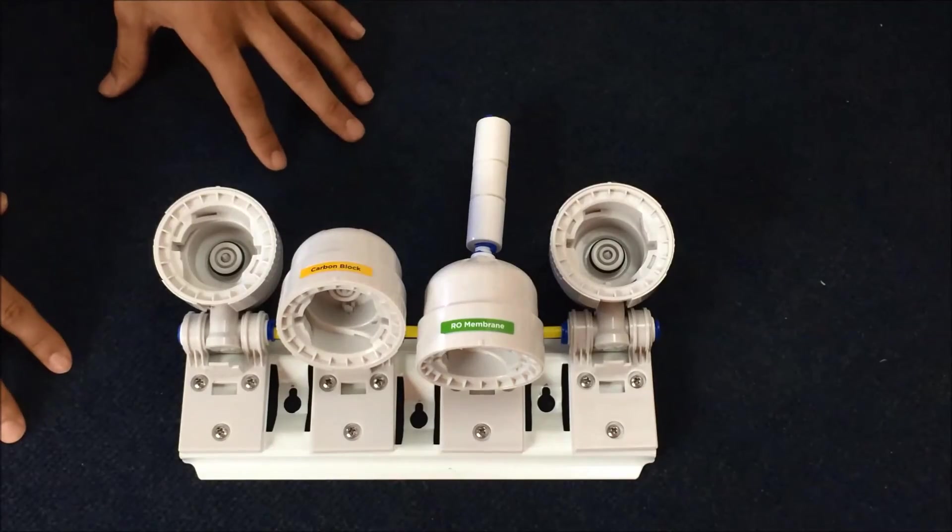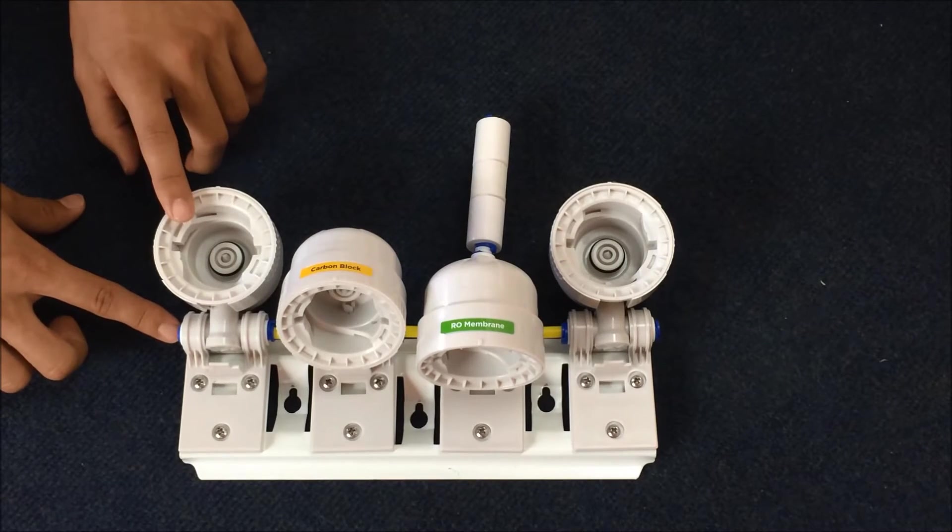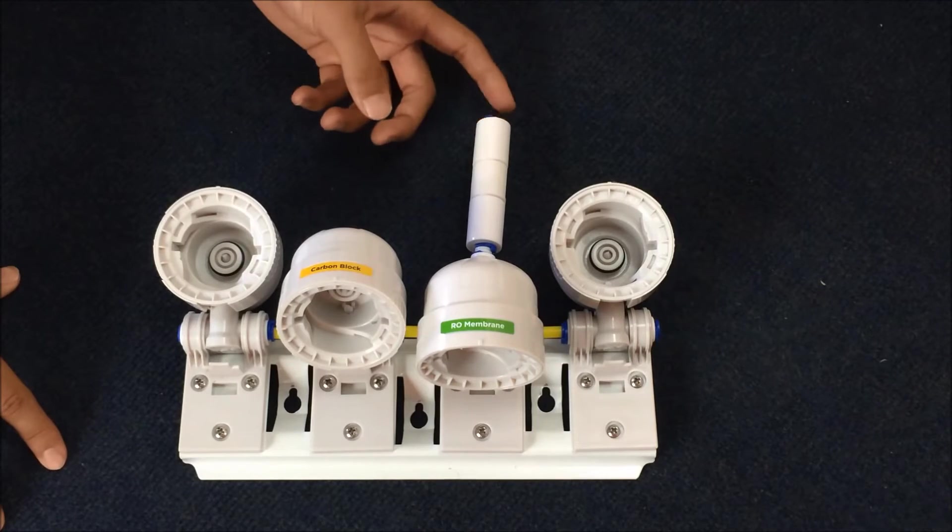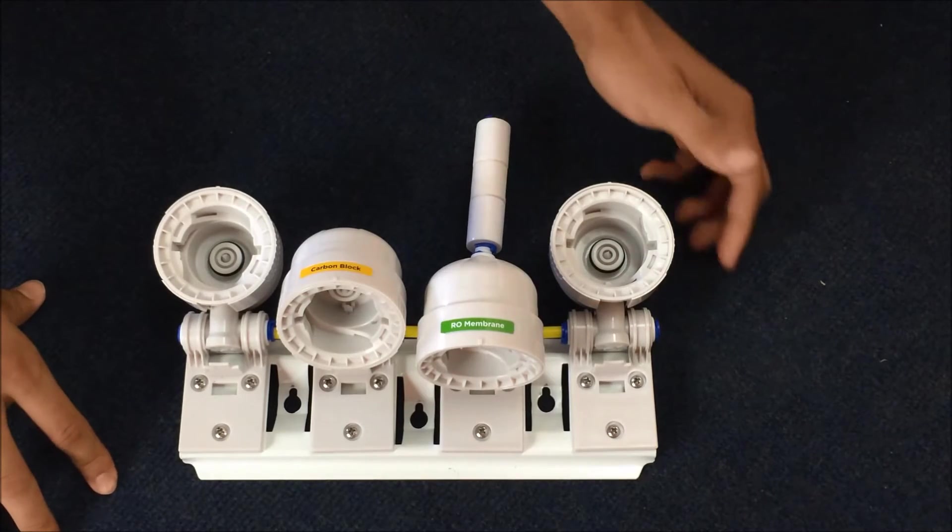The yellow tubing is used for your supply water and that'll get connected to this port here, nearest the sediment cartridge. The red is for your waste water. That'll be connected into this port here of the flow restrictor. The blue is for your filtered water and that'll go into this port here.